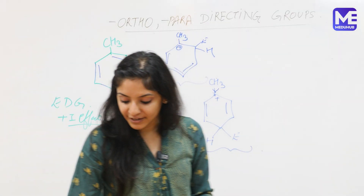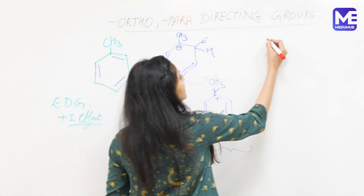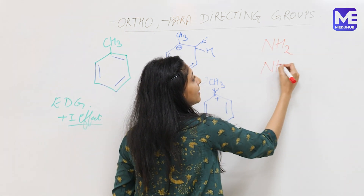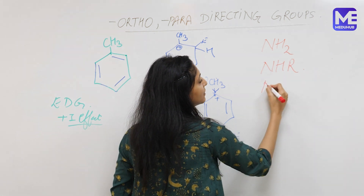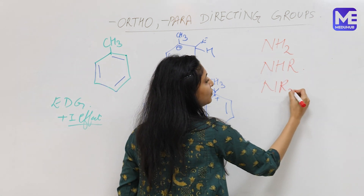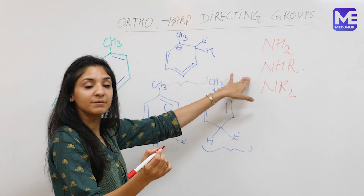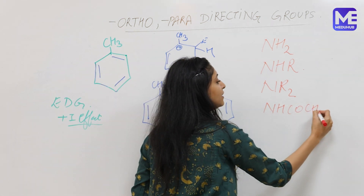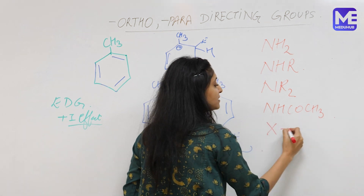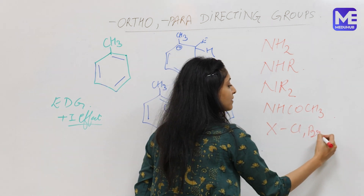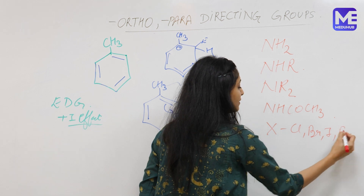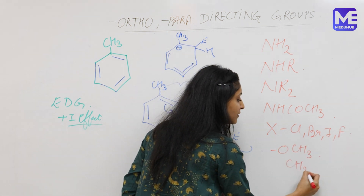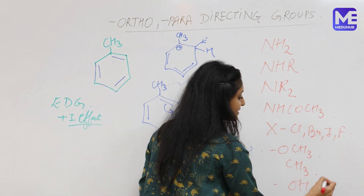Some other ortho/para directing groups are: amines — NH2, NHR, NR2 (primary, secondary, and tertiary amines) — amide group, NHCOCH3, all halogens (chlorine, bromine, iodine, fluorine), methoxy group, methyl group, hydroxy group, and others.